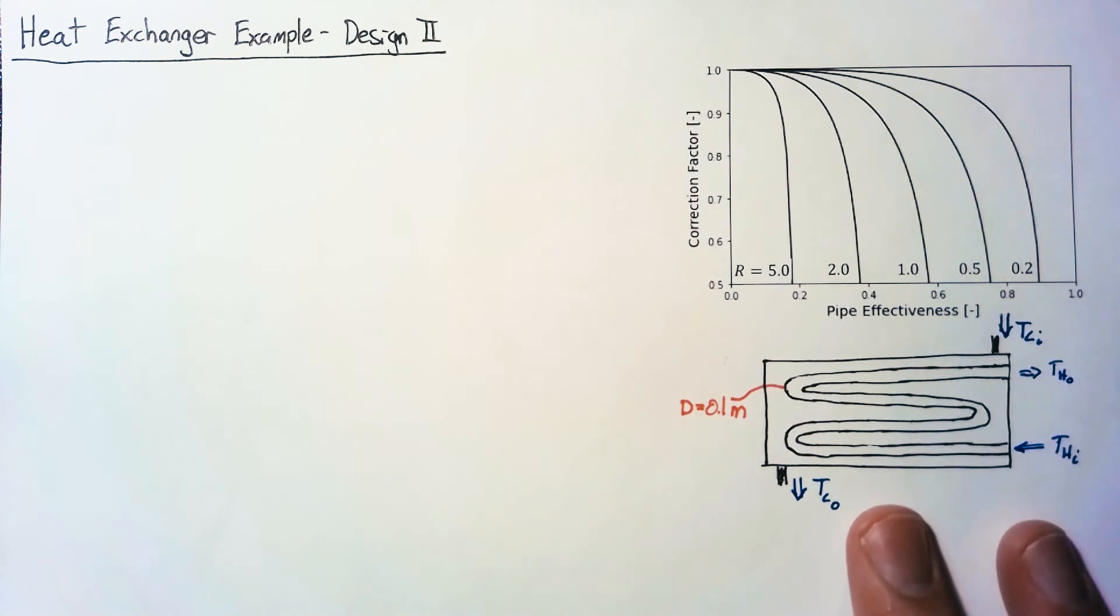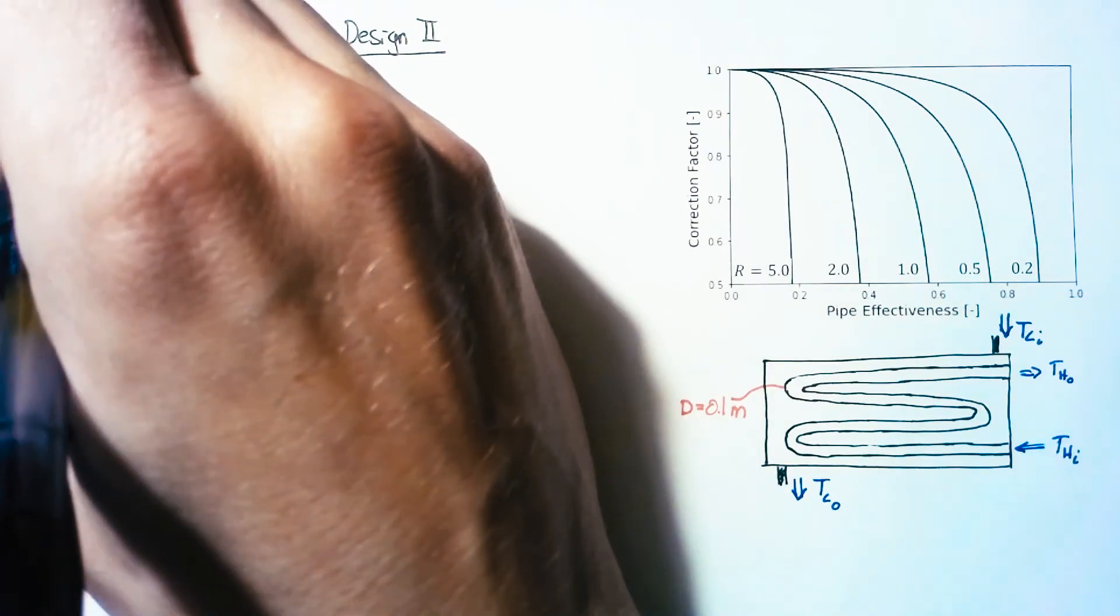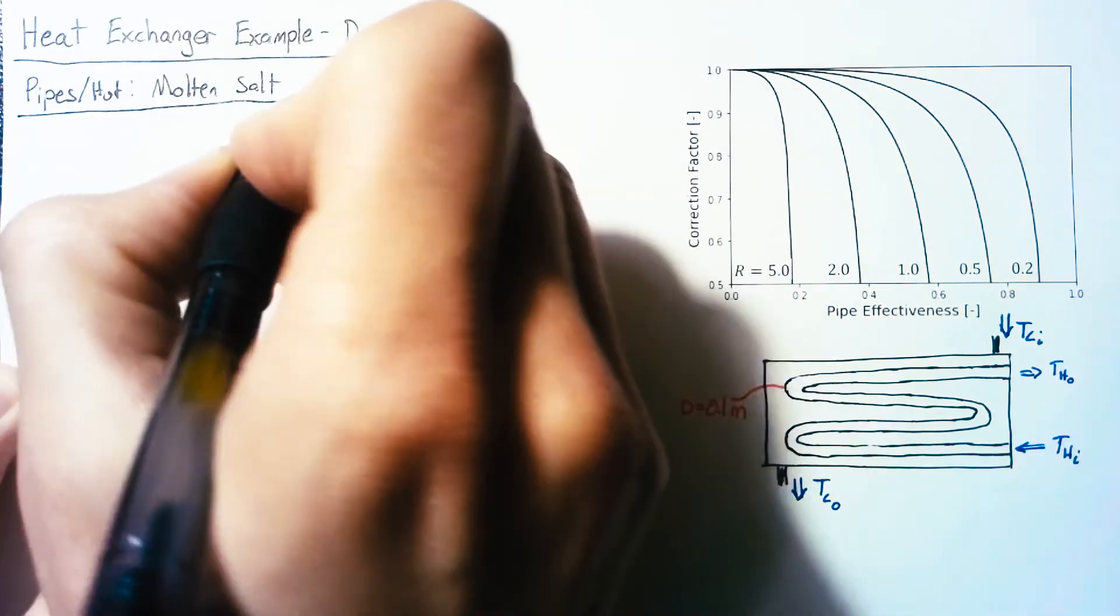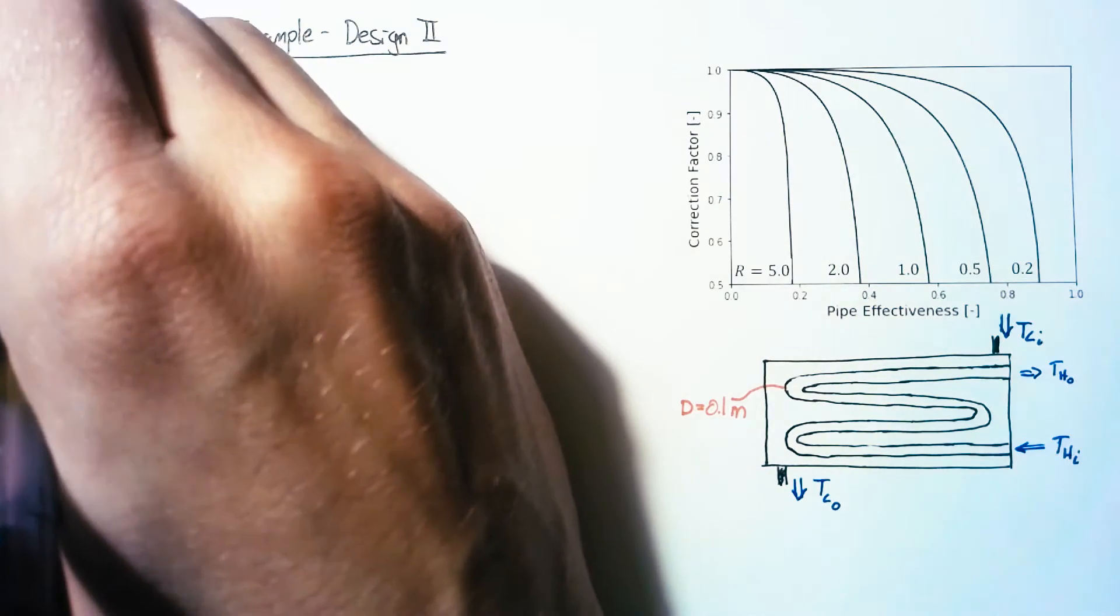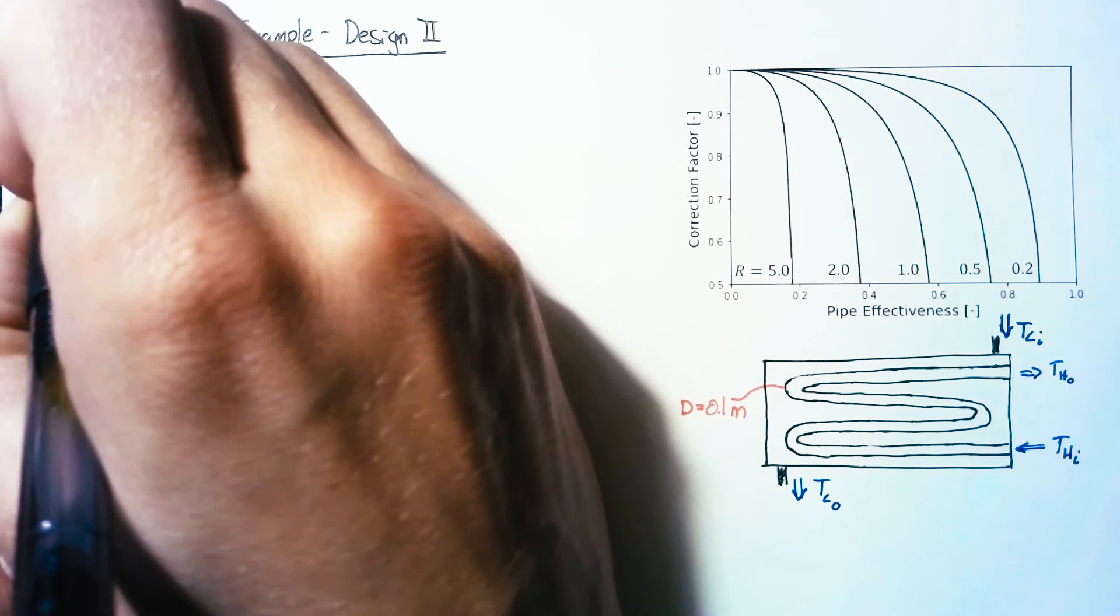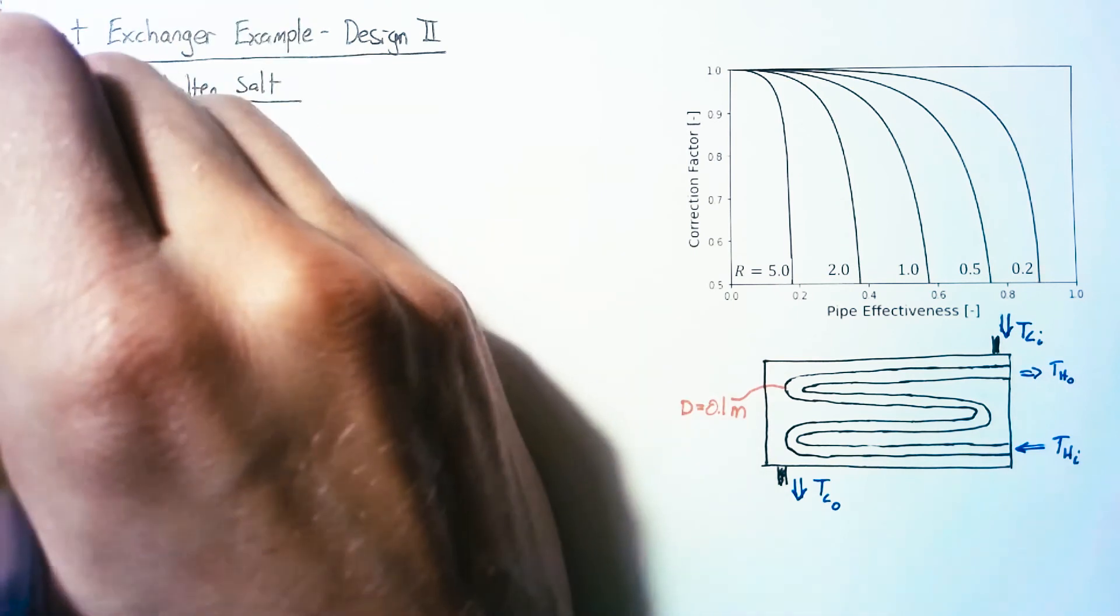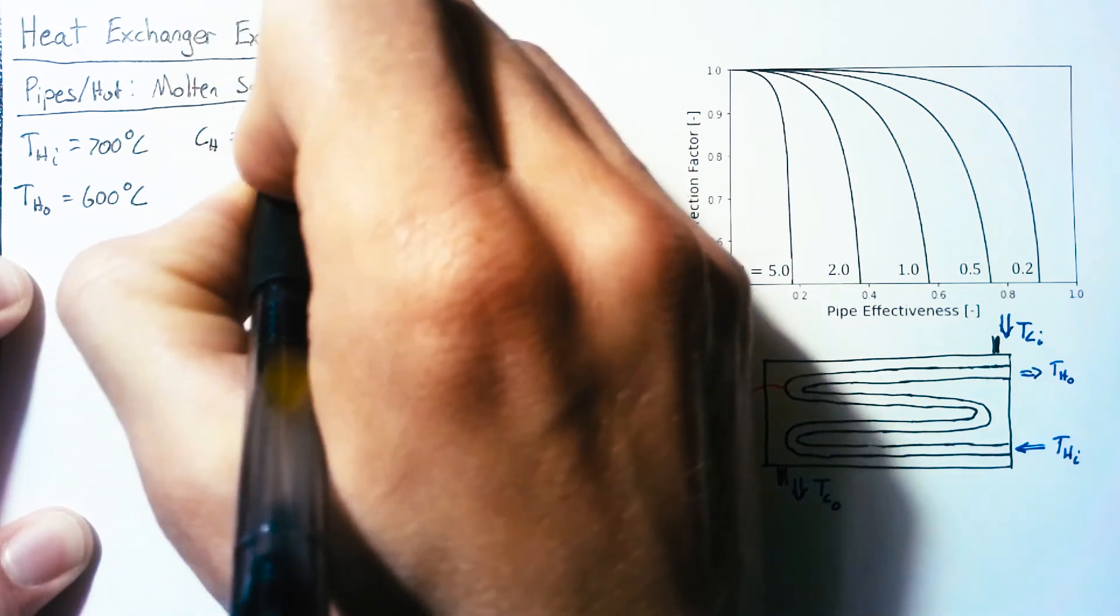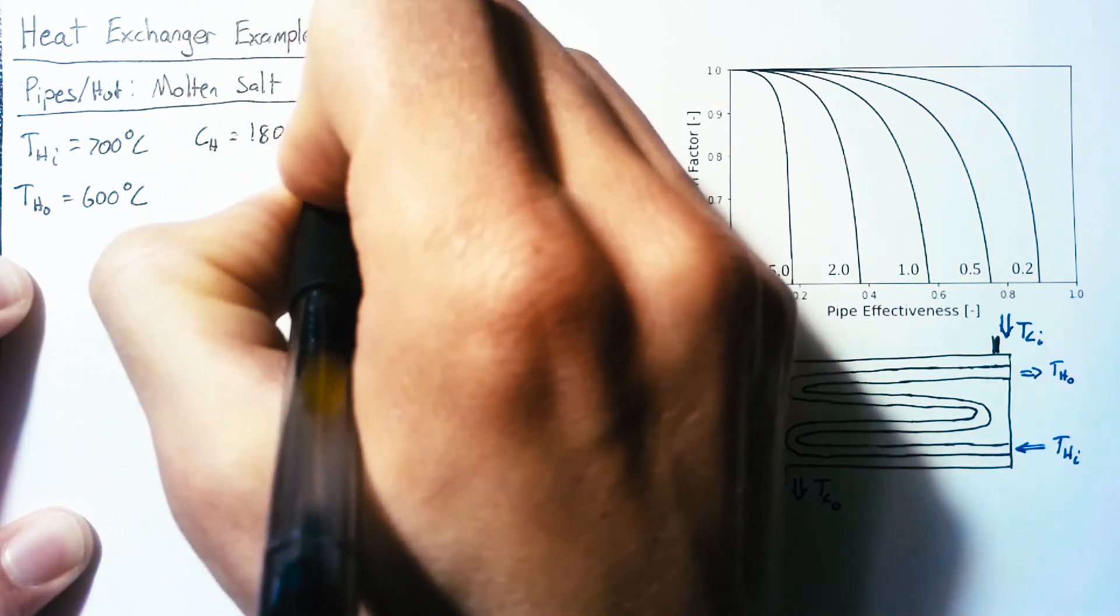Now, with the geometry defined, let's go ahead and move on and talk about the materials. On the hot side, or through the pipes, we're going to have molten salt as our fluid. We are going to have an inlet temperature of 700 degrees Celsius and an outlet temperature of 600 degrees Celsius. And the salt we'll be working with is going to have a specific heat of 1800 joules per kilogram Kelvin.